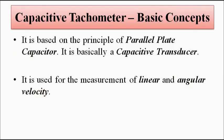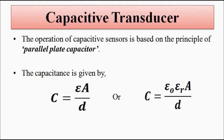The capacitive tachometer is a capacitive transducer that operates on the principle of the parallel plate capacitor, and it is used for the measurement of linear and angular velocity. Before discussing the construction and working principle of the capacitive tachometer, let us brush up a few things related to capacitive transducers. The operation of any capacitive sensor is based on the principle of the parallel plate capacitor. The capacitance of a parallel plate capacitor is given by C = εA/d.